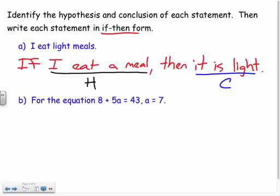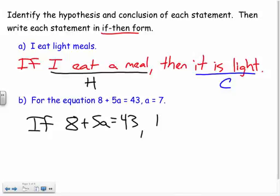And I can do the same thing for math down here. For the equation, 8 plus 5a equals 43, a equals 7. Well, it's kind of like that last page we looked at. If my equation, if 8 plus 5a equals 43, then a equals 7.